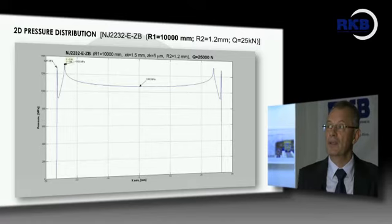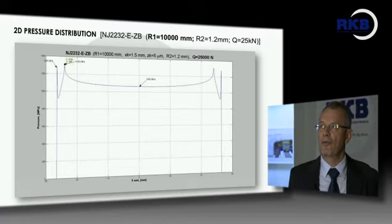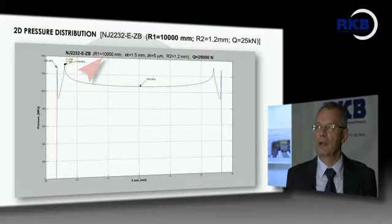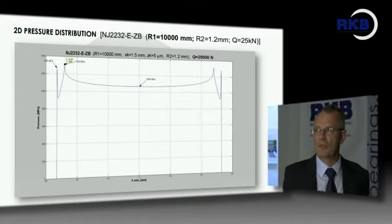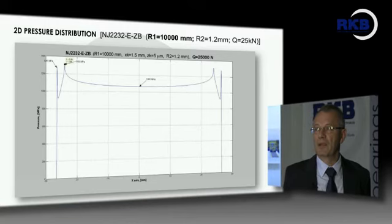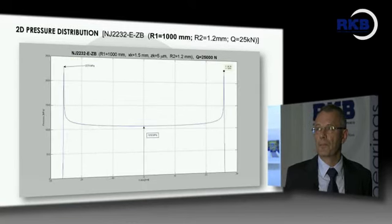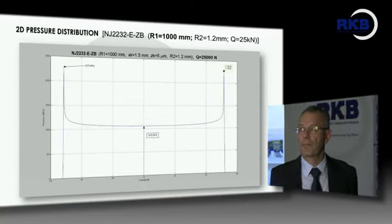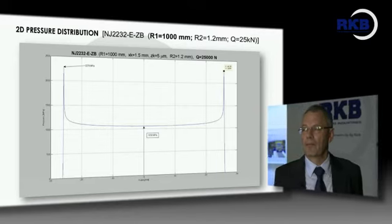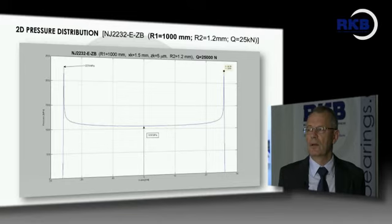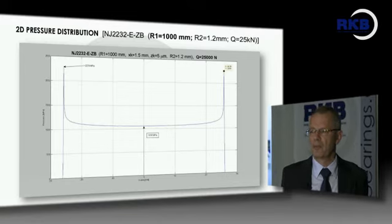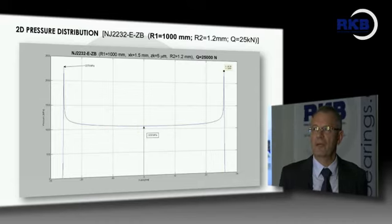If we change the crowning radius R1 from 10,000 millimeters to 1,000 millimeters, there is only a very small increase in the central zone and practically no modification of the pressure there, but a very sharp increase of the pressure at the end.